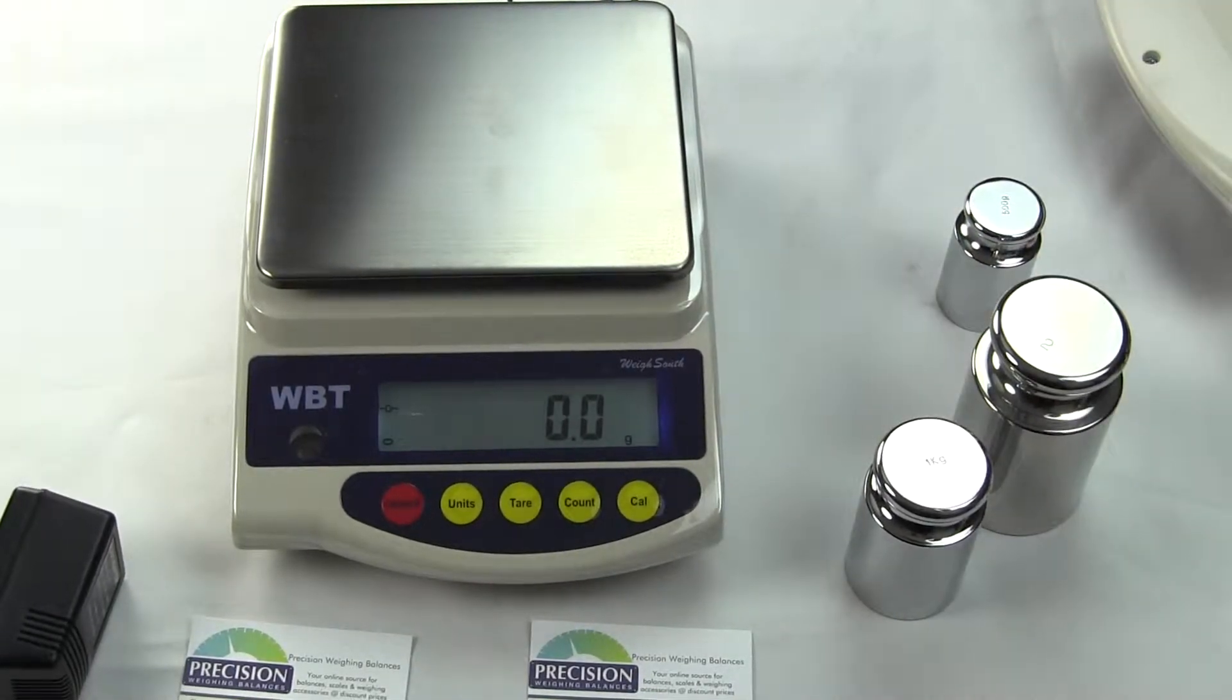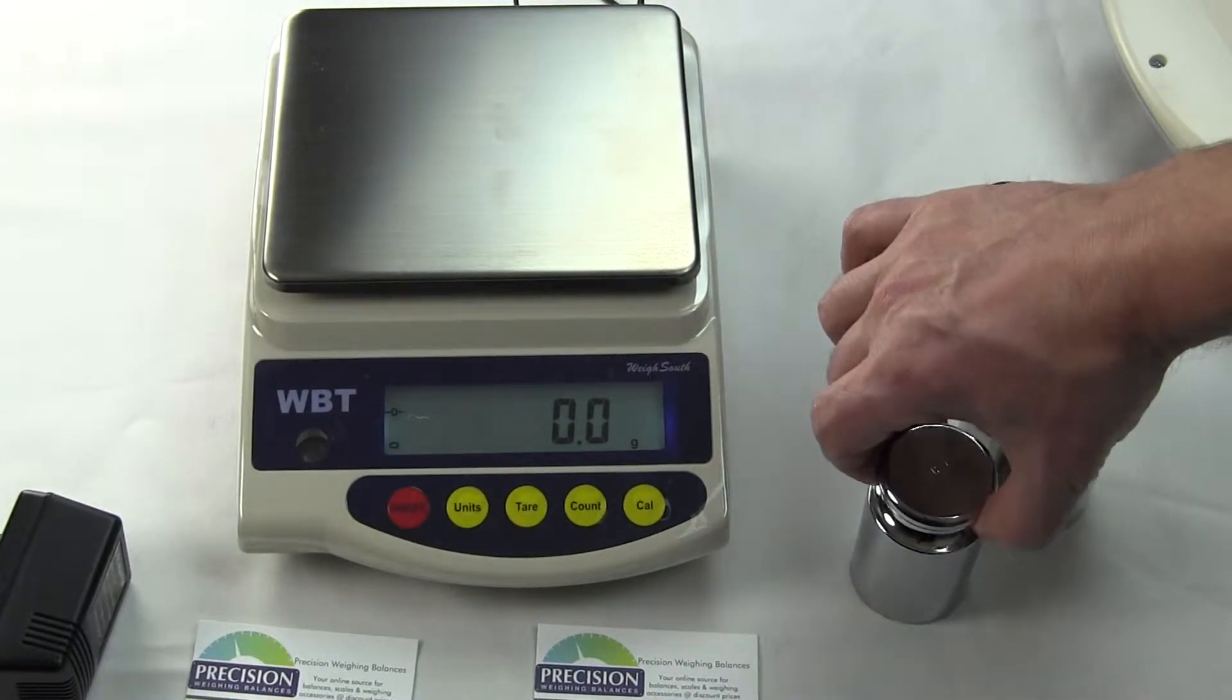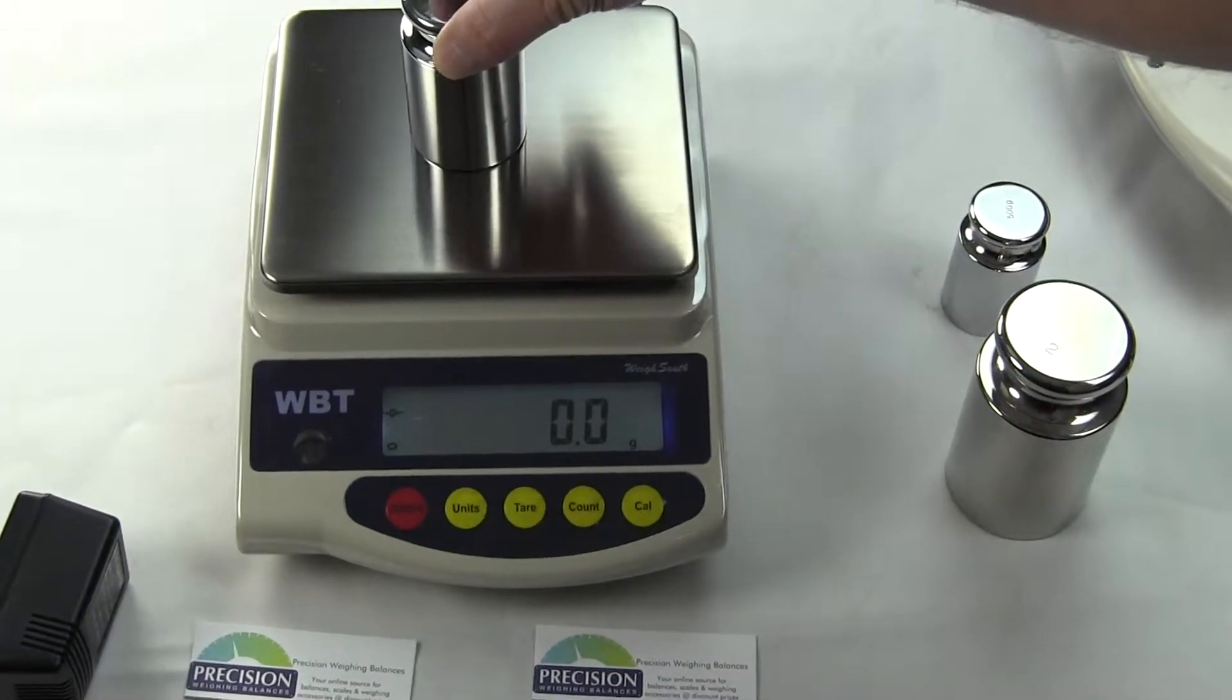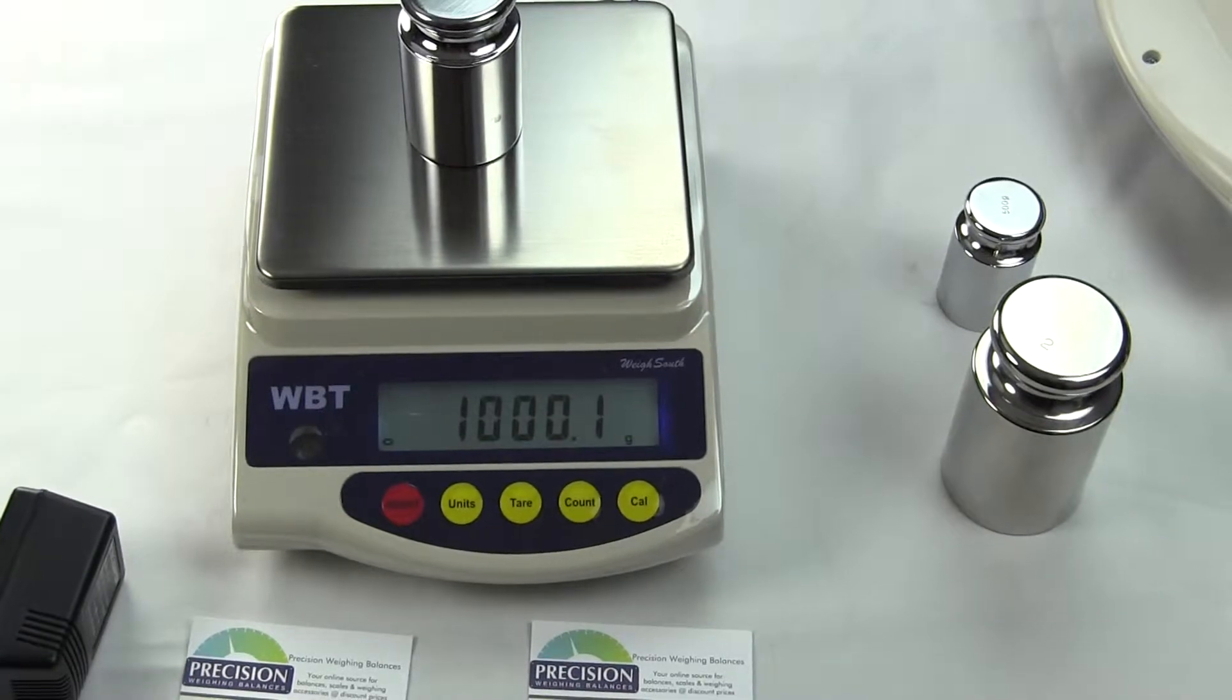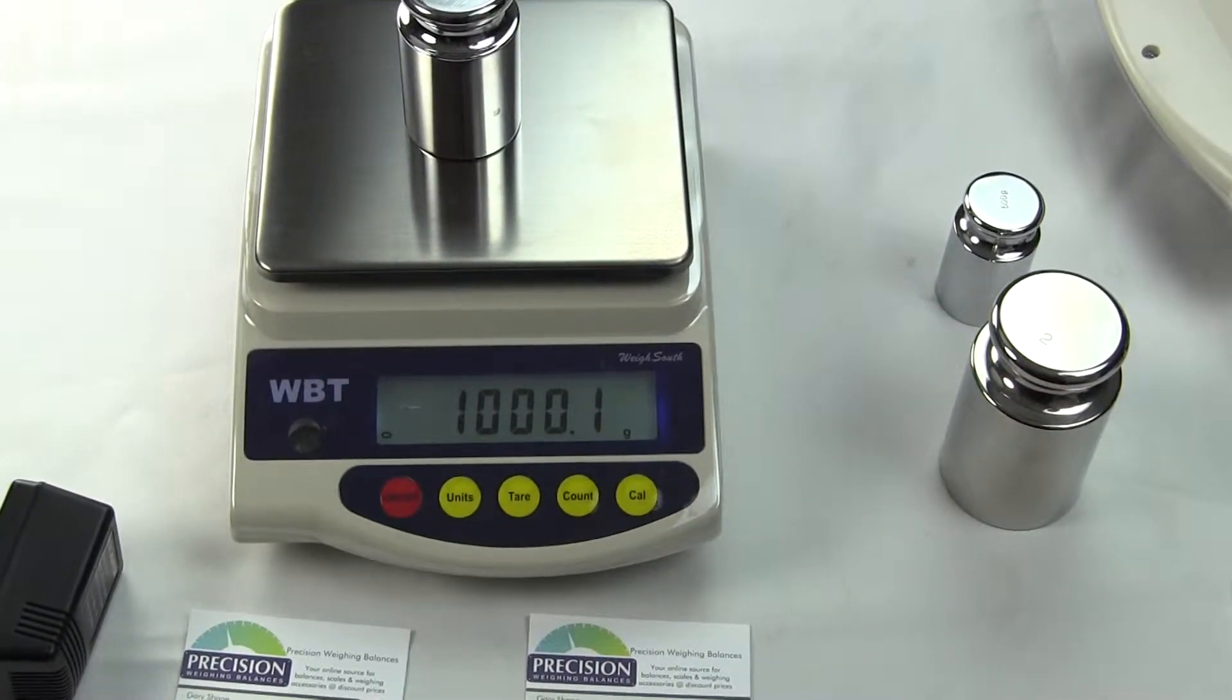I just want to basically give you an overview on the scale. All WBT series scales have multiple weigh modes. Right now we're in grams, in the lower right hand corner you can see it says G.